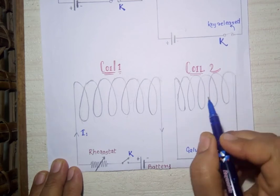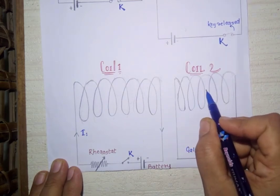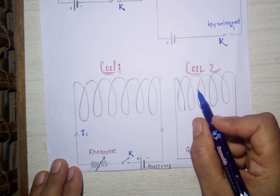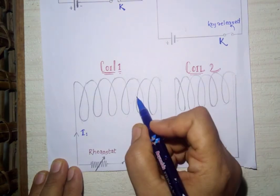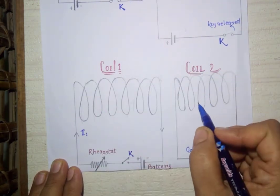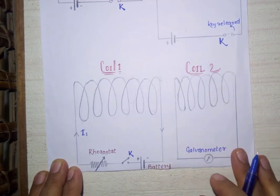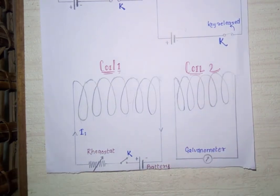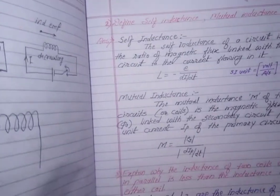The phenomenon of production of induced EMF in a coil due to the rate of change of magnetic flux in the neighboring coil - the induction produced in the second coil due to flux changes in the neighboring coil - is called mutual induction.